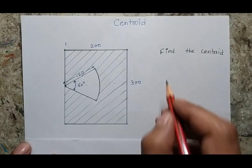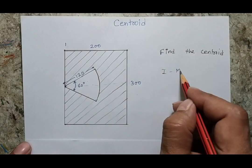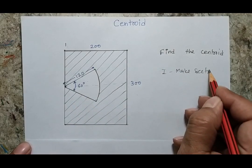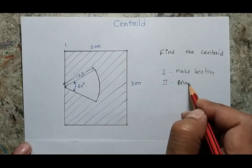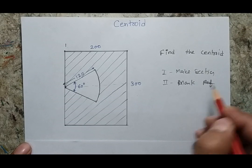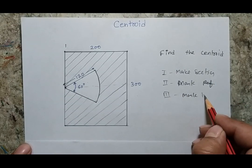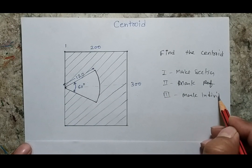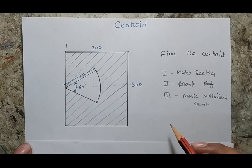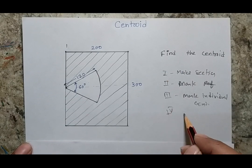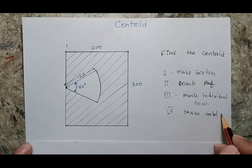My first job would be making two different sections. My second job would be to define or mark references. My third job would be to mark individual centroids. Once I complete these three steps, my fourth step will be to make a table. I always follow this philosophy which reduces my error.